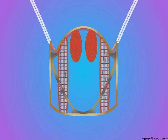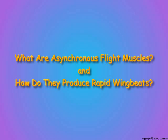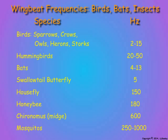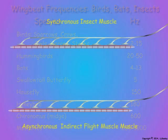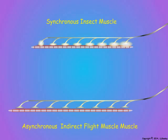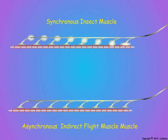Next we shall demonstrate how the indirect flight muscles can attain such rapid rates of wingbeat. Earlier we compared wingbeat frequencies for birds, bats, and insects and saw that some fast-flying insects such as flies, mosquitoes, wasps, and bees have wingbeat frequencies of 100 to more than 1000 Hz. One adaptation is the way the indirect flight muscles respond to nervous control. With the exception of the insect indirect flight muscles, animal muscles are synchronous in that they contract maximally once for each impulse from a motor neuron. Insects with slow wing beats in the 5 to 50 Hz range have synchronous flight muscles.